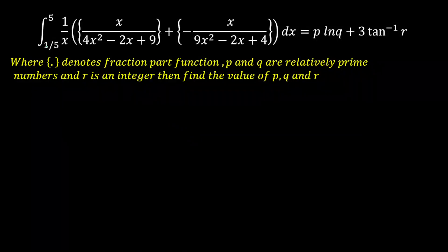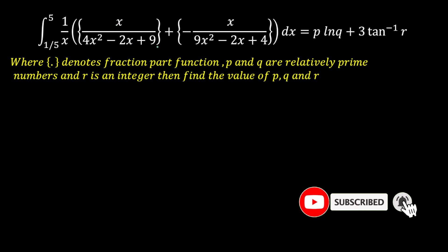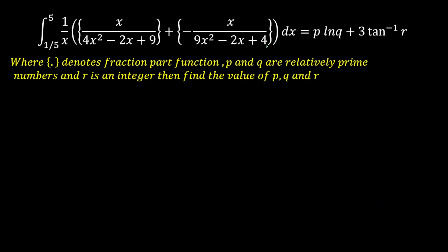Hello everyone. Today's question is the integration from 1/5 to 5 of (1/x) times the fractional part of x/(4x²-2x+9) plus the fractional part of (-x)/(9x²-2x+4), dx, which is given by p·ln(q) + 3·tan⁻¹(r). Here the bracket denotes the fractional part, p and q are relatively prime, and r is an integer. We have to find p, q, and r.